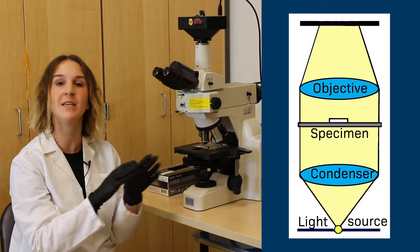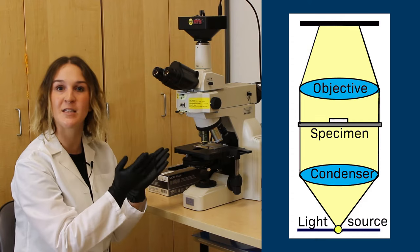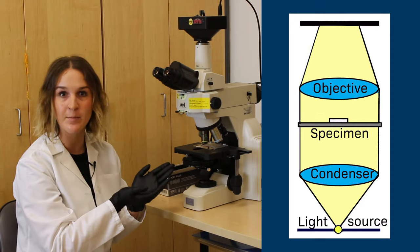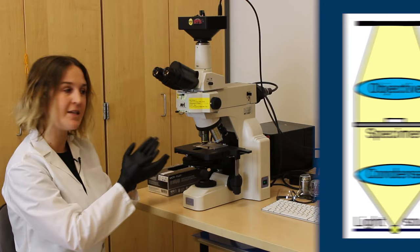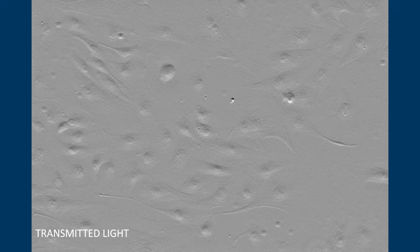And so the important lenses for today are first the condenser lens which allows us to have nice even illumination on our sample. The objective lens that collects the light that's being transmitted through our sample. That's why we call this form of microscopy transmitted light microscopy. And then we have some internal lens elements that focus the image of our sample onto our detector or camera.